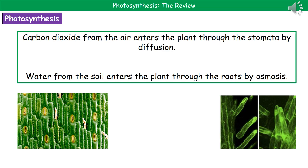We've got two reactants to know about. The first one is carbon dioxide, which comes from the air surrounding the plants, and it enters through the stomata by a process called diffusion. In the bottom left, you can see a diagram of the leaf — the little things outlined in yellow are the stomata, the pores that enter the leaf.